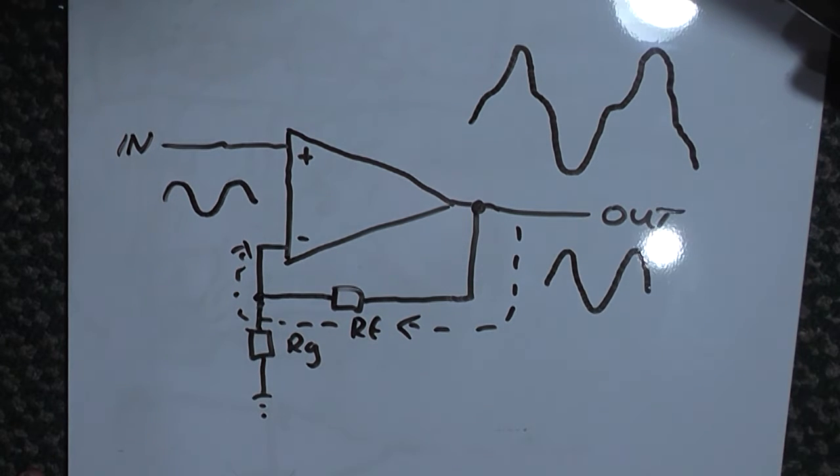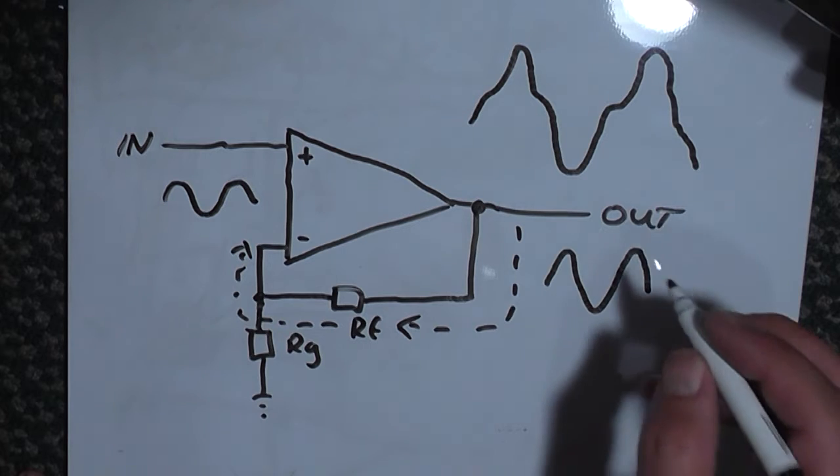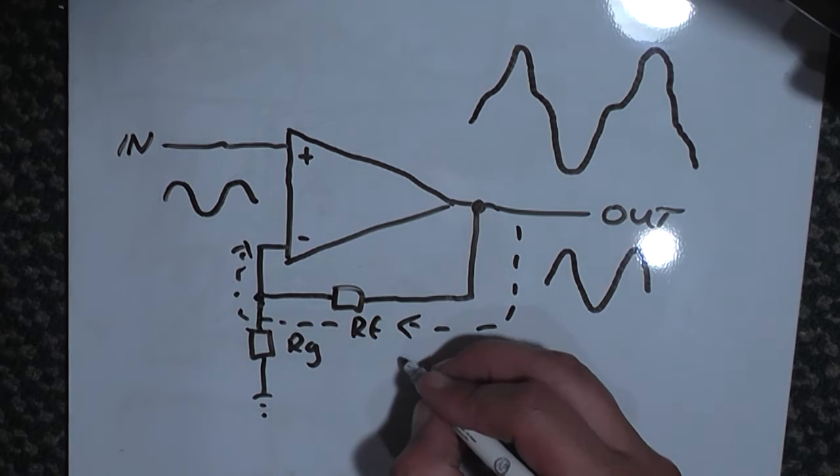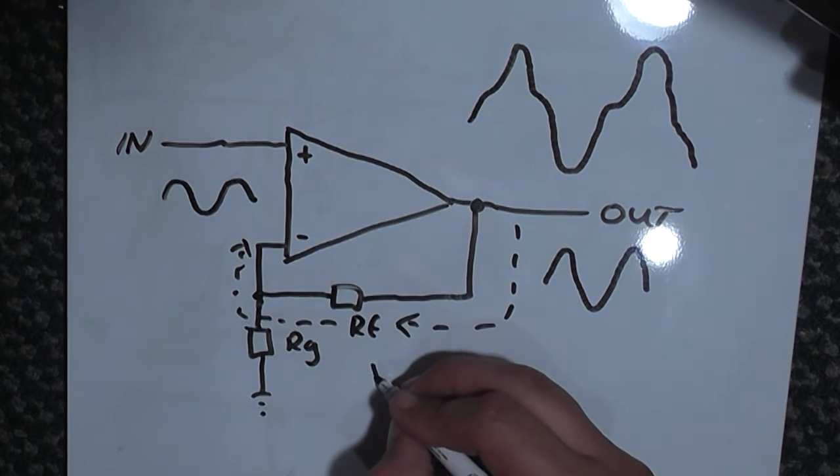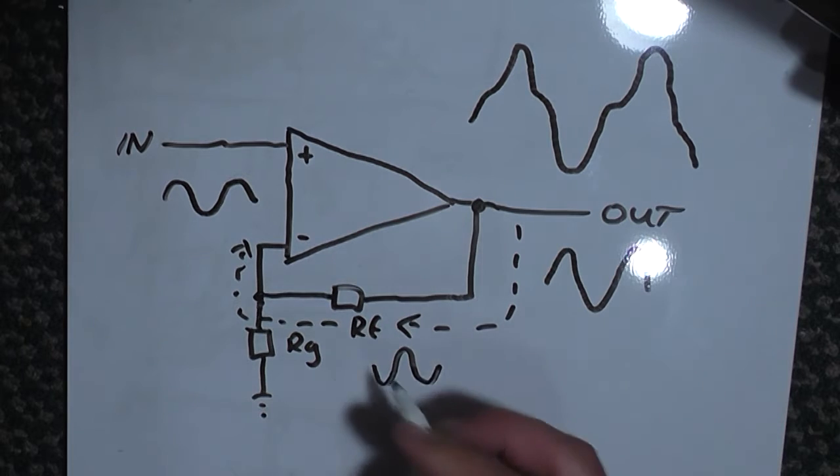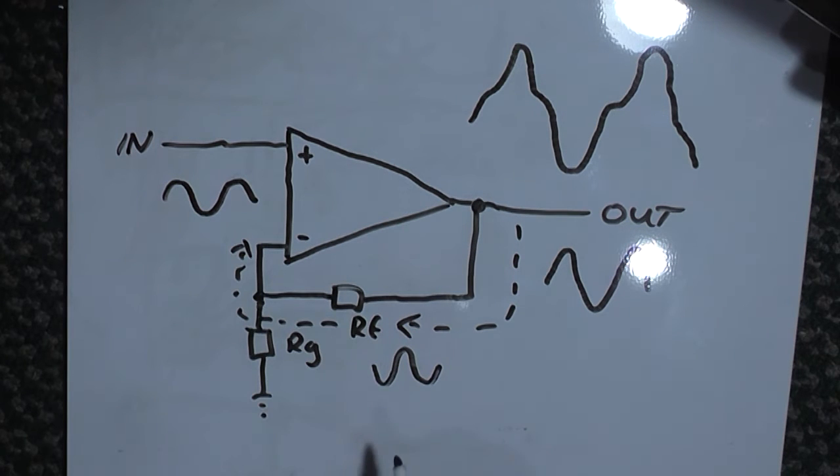What we end up with is a nice amplified sine wave without the distortion, but with a lot less gain as previously discussed. Negative feedback also means that the signal being fed back into the amplifier is the inverse of the input, so 180 degrees out of phase.